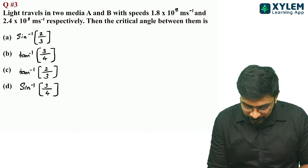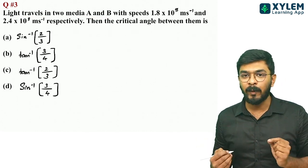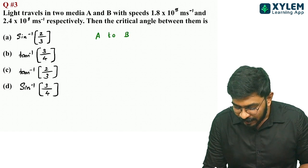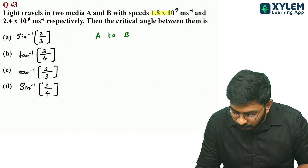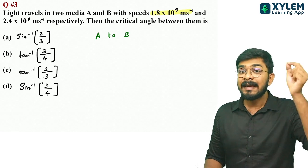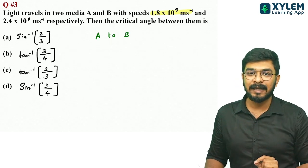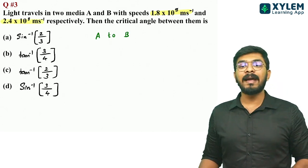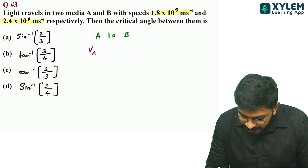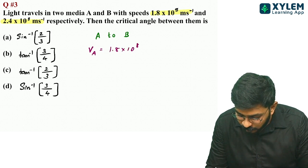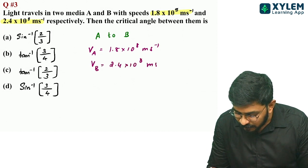Third question: light travels in two media A and B. In medium A, the speed is 1.8 into 10 raise to 8 meters per second. In medium B, the speed is 2.4 into 10 raise to 8 meters per second. So VA equals 1.8×10⁸ m/s and VB equals 2.4×10⁸ m/s.